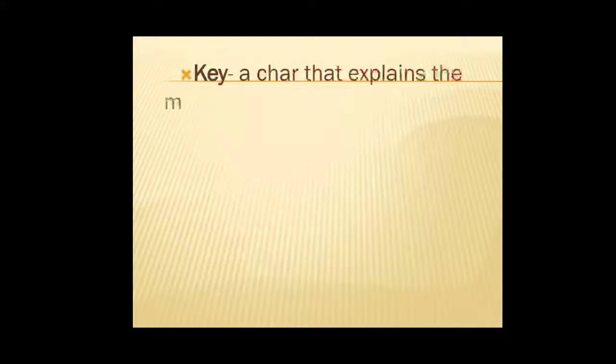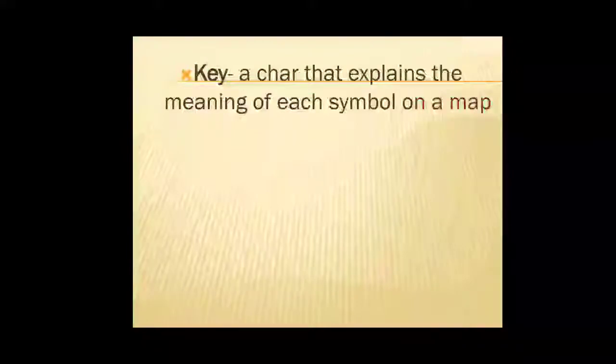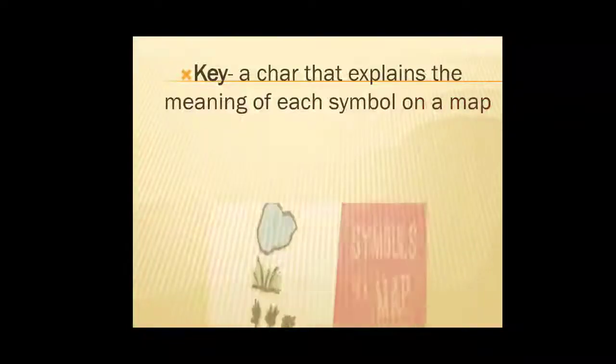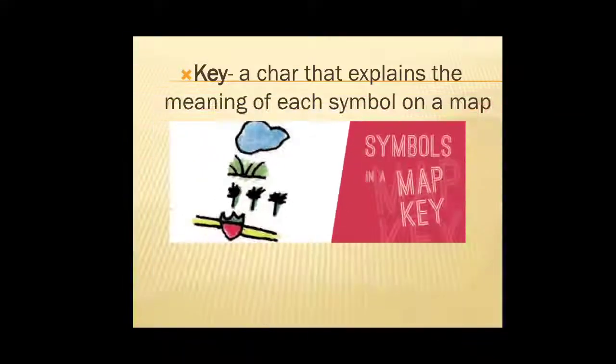The next new word is key. Key is one of the elements in a map. Key is a chart that explains the meaning of each symbol on a map. The first symbol will show you a water body. The second one will show you trees. The third one is also trees.